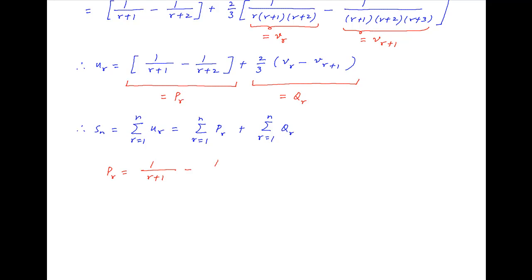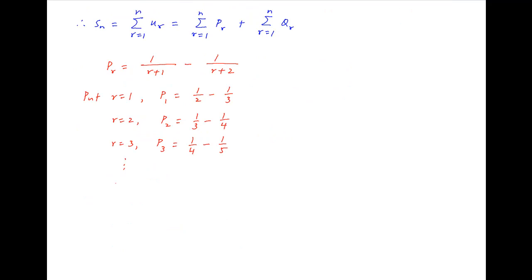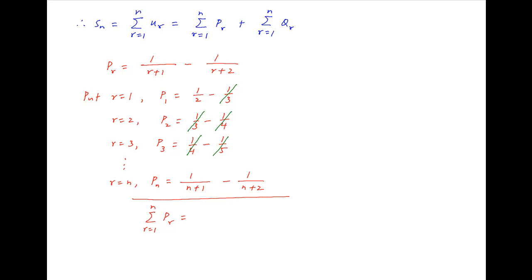We first evaluate p_r, which is equal to 1/(r + 1) minus 1/(r + 2). Putting r = 1: p_1 = 1/2 minus 1/3. Putting r = 2: p_2 = 1/3 minus 1/4. Putting r = 3: p_3 = 1/4 minus 1/5, and so on. The nth term p_n = 1/(n + 1) minus 1/(n + 2). Summing all these equations, the terms telescope — 1/3 cancels with 1/3 in the next row, 1/4 cancels with 1/4 in the next row, and so on — leaving only two terms. Therefore, the sum equals 1/2 minus 1/(n + 2).